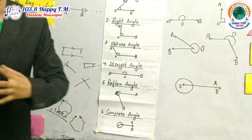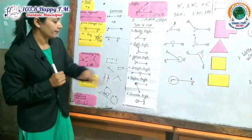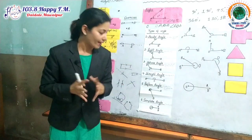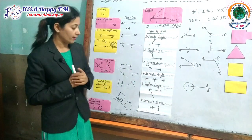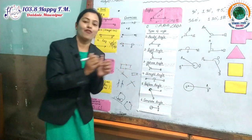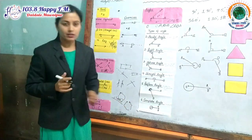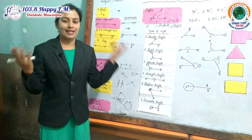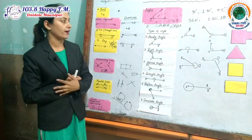Number four is the straight angle. Straight means straight line — you can see here it is a straight line. Points A, O, B make a straight line, so it is exactly 180 degrees. Number five, the second last, is the reflex angle: greater than 180 degrees and less than 360 degrees. Don't be confused, my dear students — the outer angle here is the reflex angle. If you look at the inner angle, it makes an acute angle. Number six, the last topic, is the complete angle: when the angle's measurement is exactly 360 degrees, that is a complete angle.